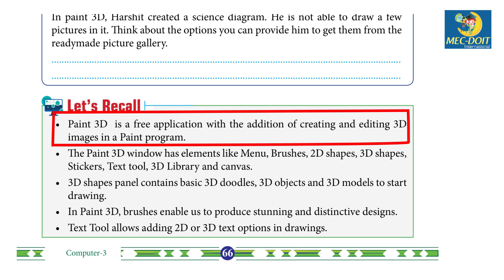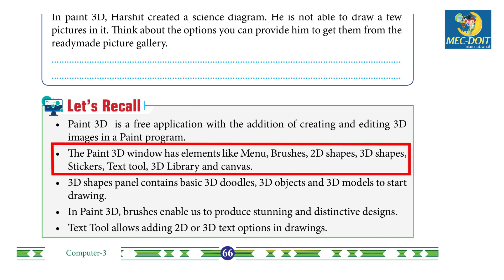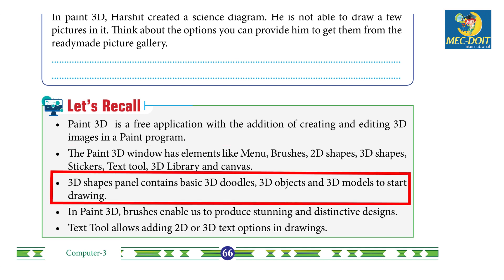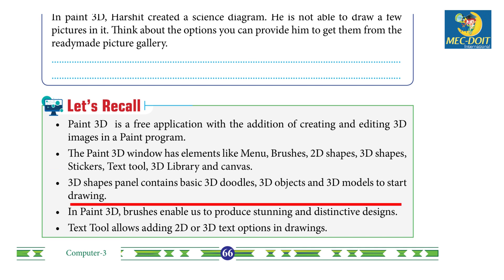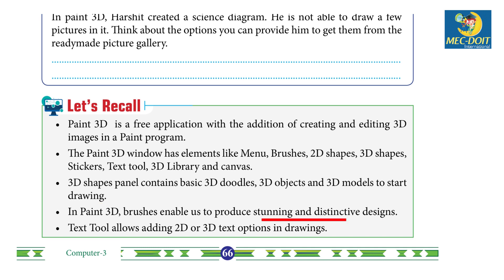The Paint 3D window has elements like Menu, Brushes, 3D Shapes, 2D Shapes, Stickers, Text, 3D Library, and Canvas. The 3D shapes panel contains basic 3D doodles, 3D objects, and 3D models for drawing. In Paint 3D, Brushes enable us to produce stunning and distinctive designs. The Text tool allows adding 2D or 3D text options in a drawing.